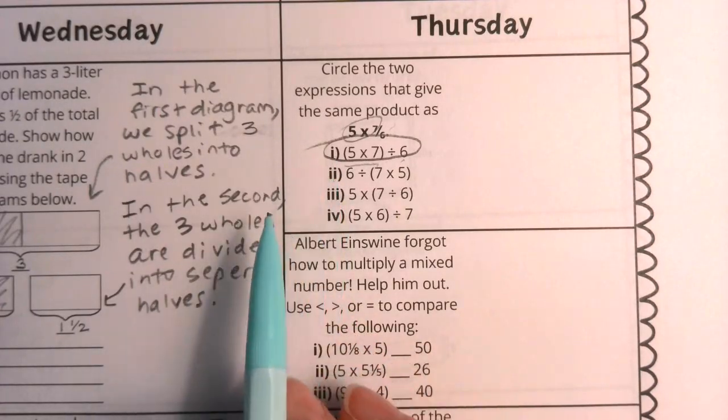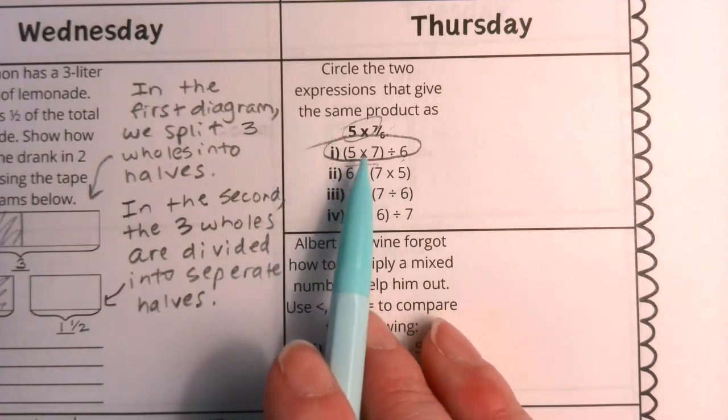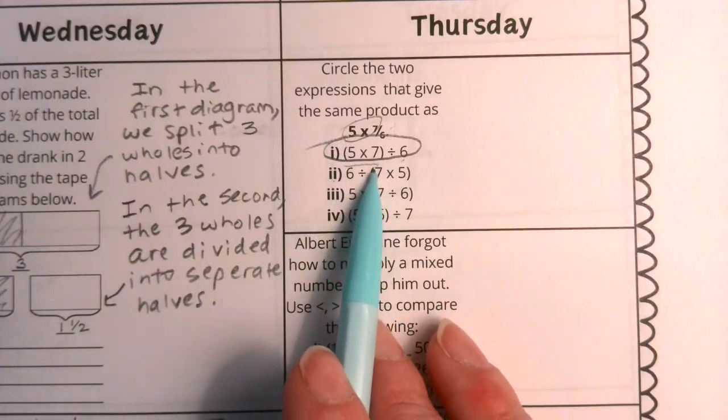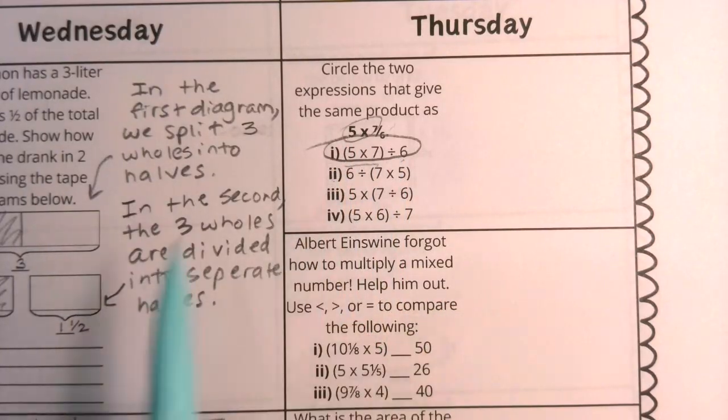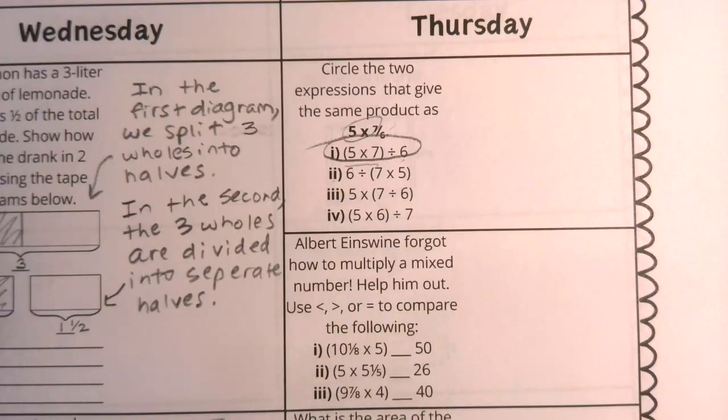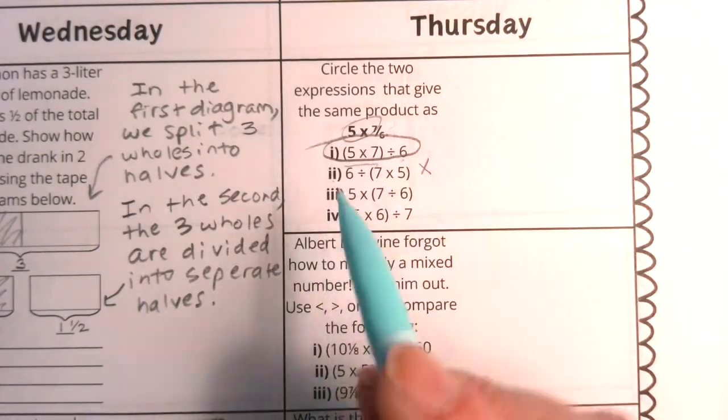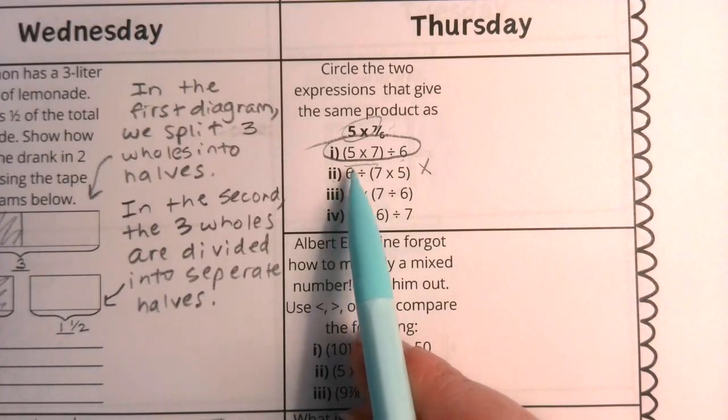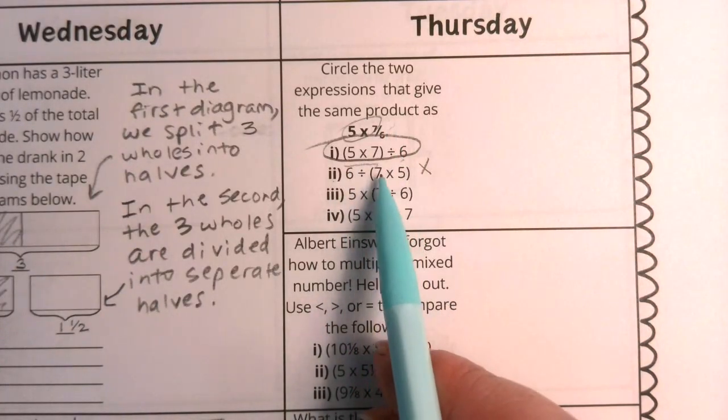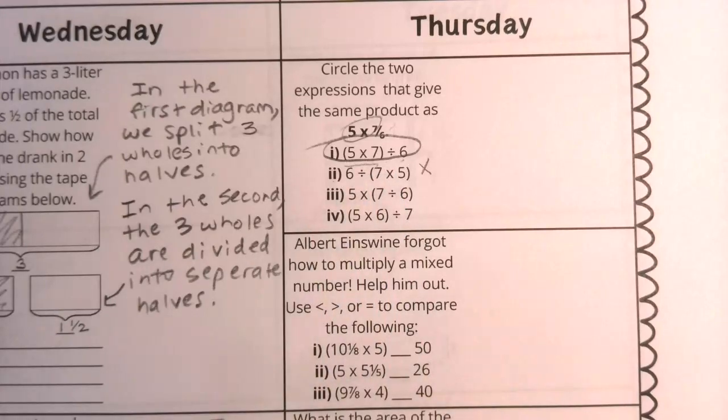Now this number two is kind of tricky because at first you might look at this and think, well, I can switch this and switch this and this is in the front. But remember, order matters in division. So we are not going to allow this six to suddenly become our numerator and then have our seven times five be our denominator. This is not true. We cannot circle the second one.